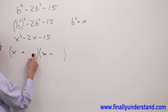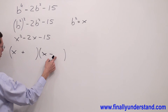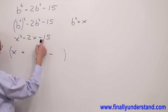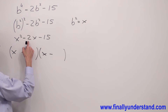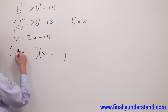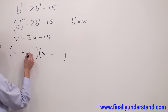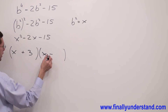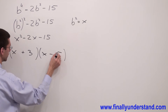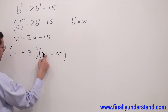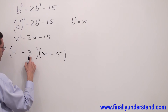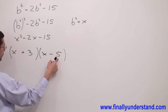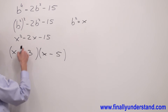Next, I have to find two numbers that multiplied by each other give me negative 15, and that add to each other give me negative 2. 3 times negative 5 gives me negative 15, and 3 plus negative 5 gives me negative 2.